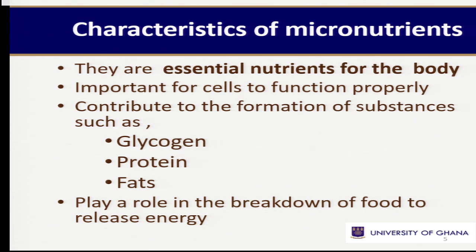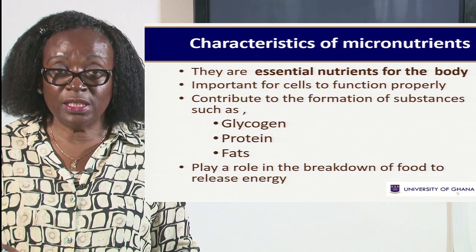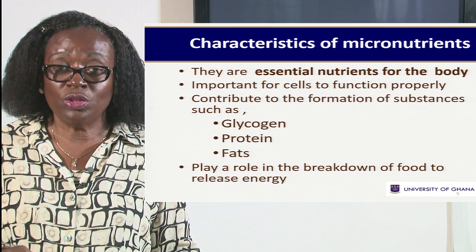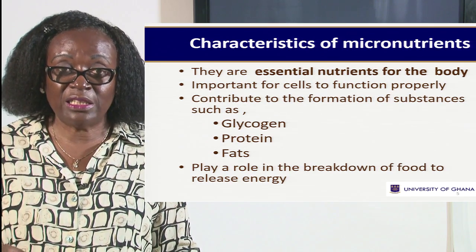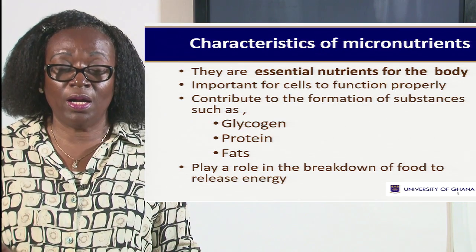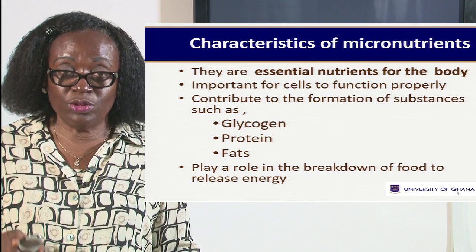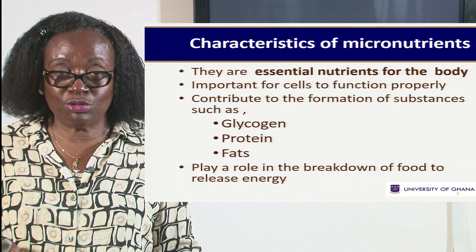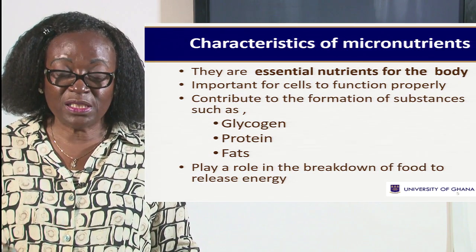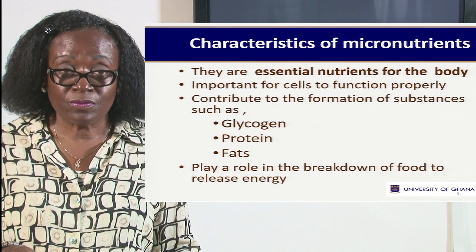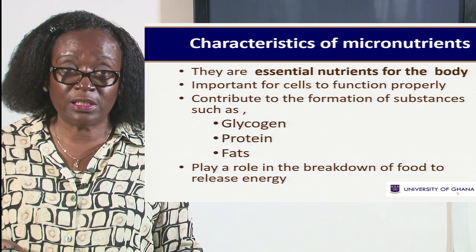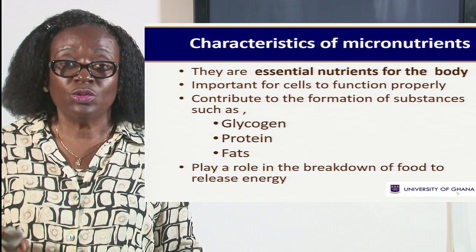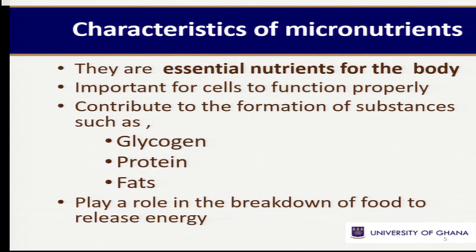Micronutrients play an important role in the body. When we want to form glycogen — the excess carbohydrates converted into glycogen for storage — we need micronutrients for that conversion. When we eat meat and fish, the proteins the body uses must be made from those foods, and we need micronutrients. When excess carbohydrates are converted into fat, or when converting fat into another form the body needs — triglycerides, phospholipids, steroids — micronutrients help in that conversion.